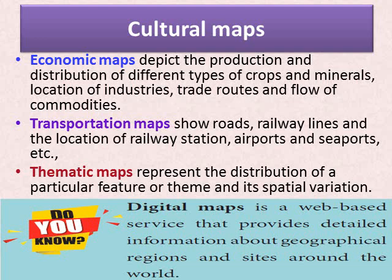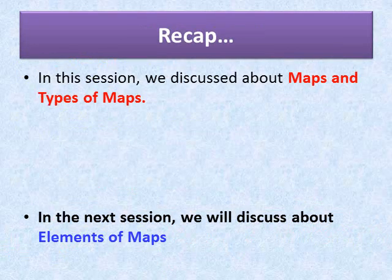There is a special map called a digital map, which is a web-based service that provides detailed information about geographical regions and sites around the world. That is what we are using when we go to Google Maps.